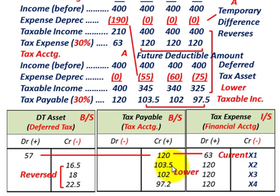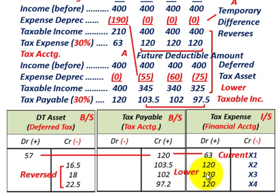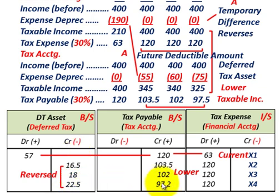For each of the next years, the deferred tax asset begins reversing. In year two, tax payable credit is $103,500 versus tax expense debit of $120,000 — the difference of $16,500 is a credit to deferred tax asset, reducing it. Year three: $120,000 debit versus $102,000 credit, so a credit of $18,000 reduces the deferred tax asset further. Year four: another balancing credit of $22,500. Note: the $97,500 figure corrects an earlier error shown as $97,200.